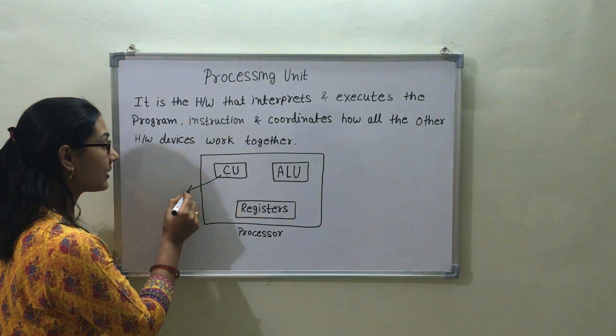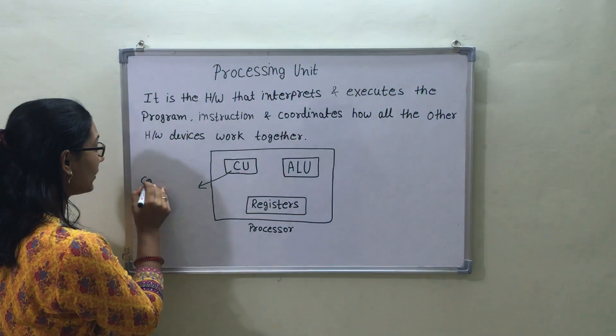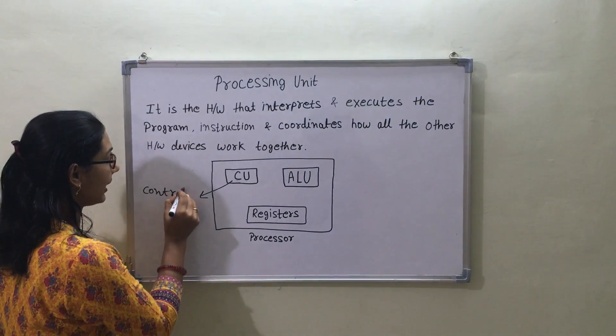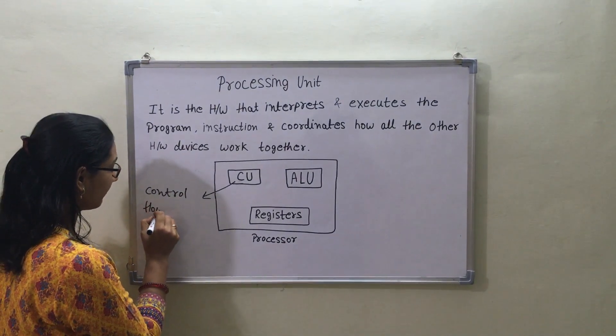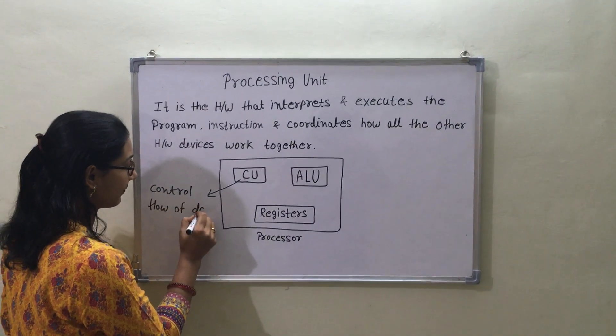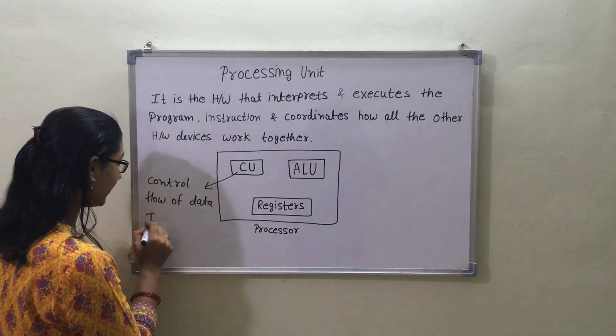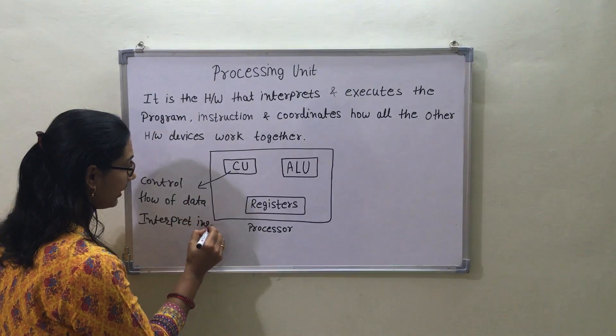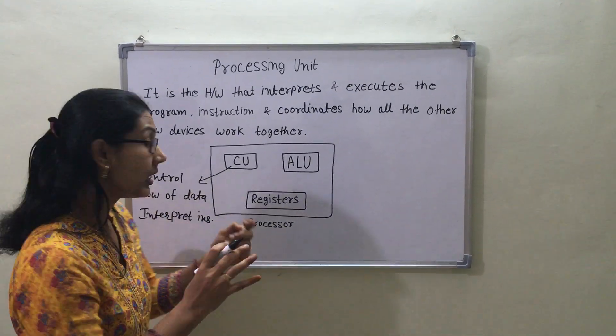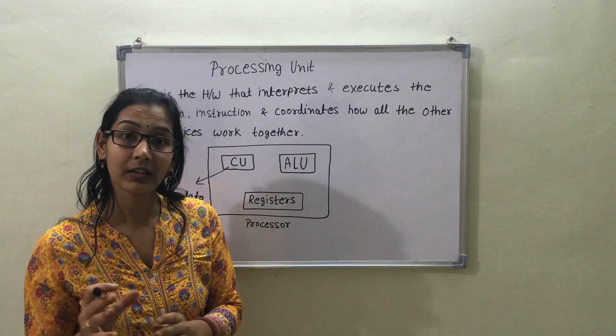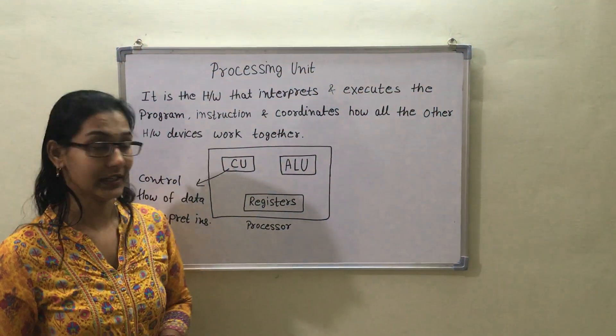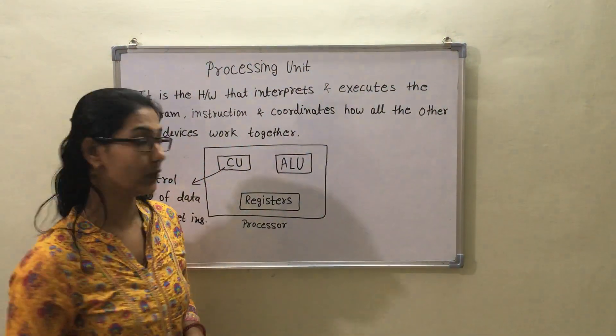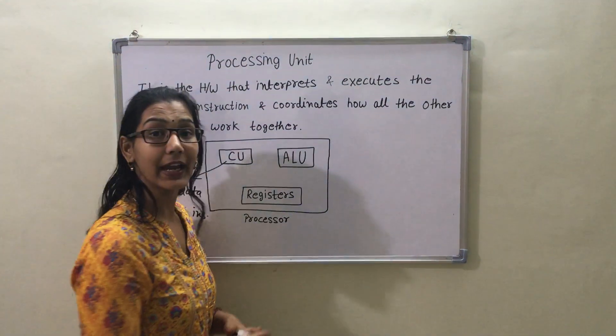The first one is control unit. It controls flow of data, interprets the instructions, and determines which task to perform and when the task is completed. This is the CU. Next is ALU.